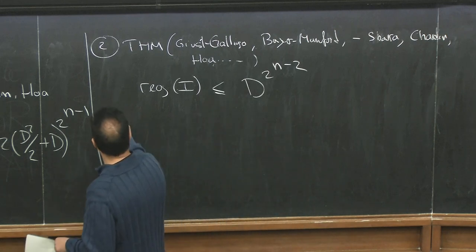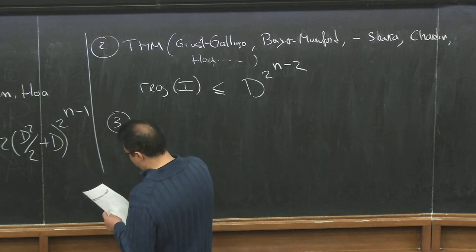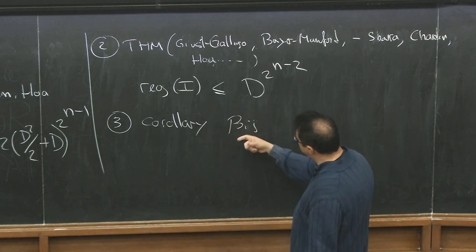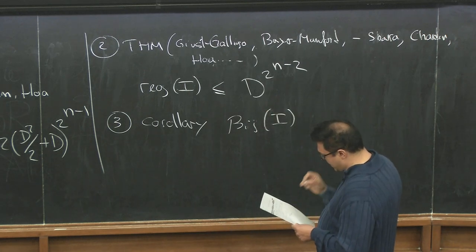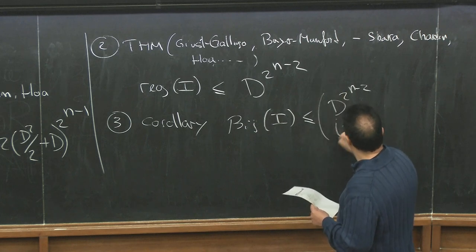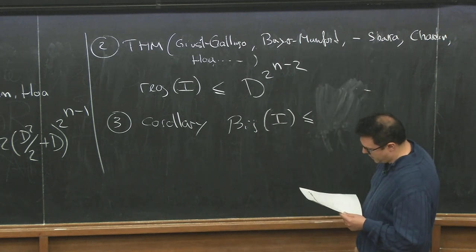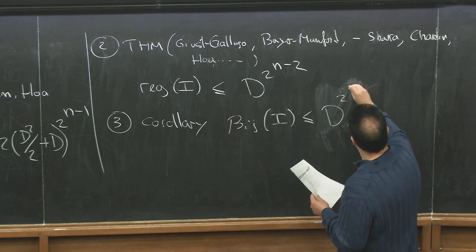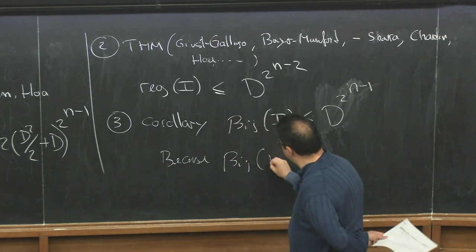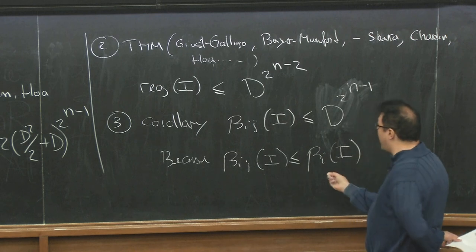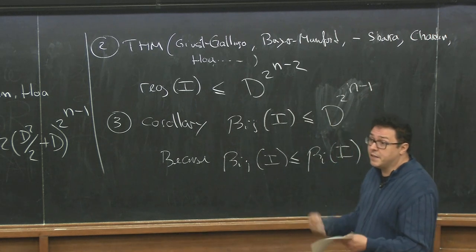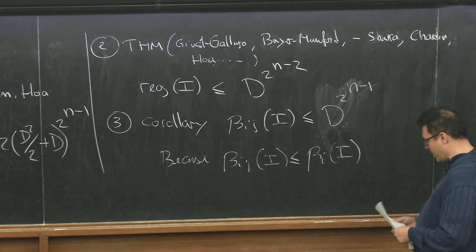Another type of bound of this flavor, actually I'm going to call this a corollary. A corollary of this is basically a bound on all the Betti numbers. So if you fix the Betti number of I, for instance, can be bounded above by, I'm going to take this number D to the 2 to the N minus 2 choose I, for instance. Actually let me write this slightly differently: D to the 2 to the N minus 1.